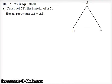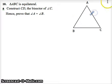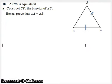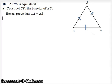We are now looking at question 10 from exercise 14.6, congruency proofs. In this question we are told that ABC is an equilateral triangle. Because we know it's equilateral we should put little markers on those sides. We're going to be asked to construct CD, which is the bisector of angle C, so I'll put that line in.